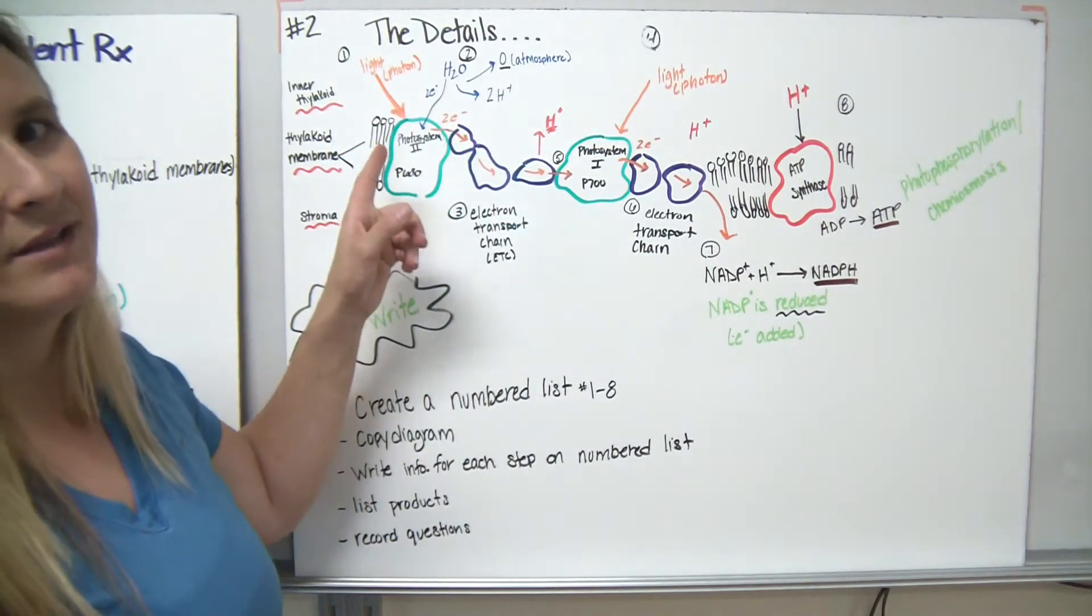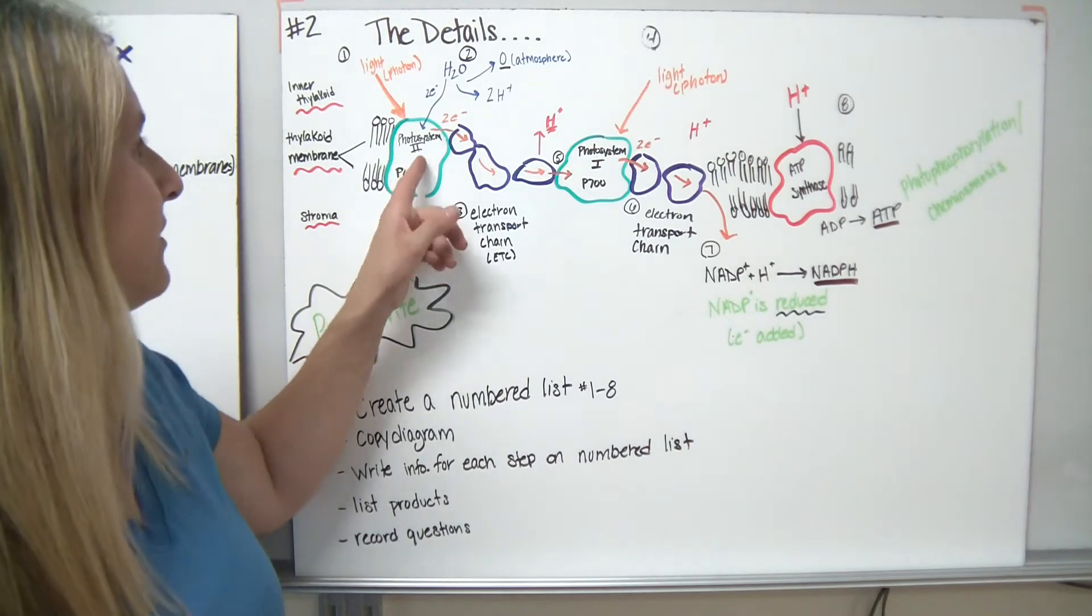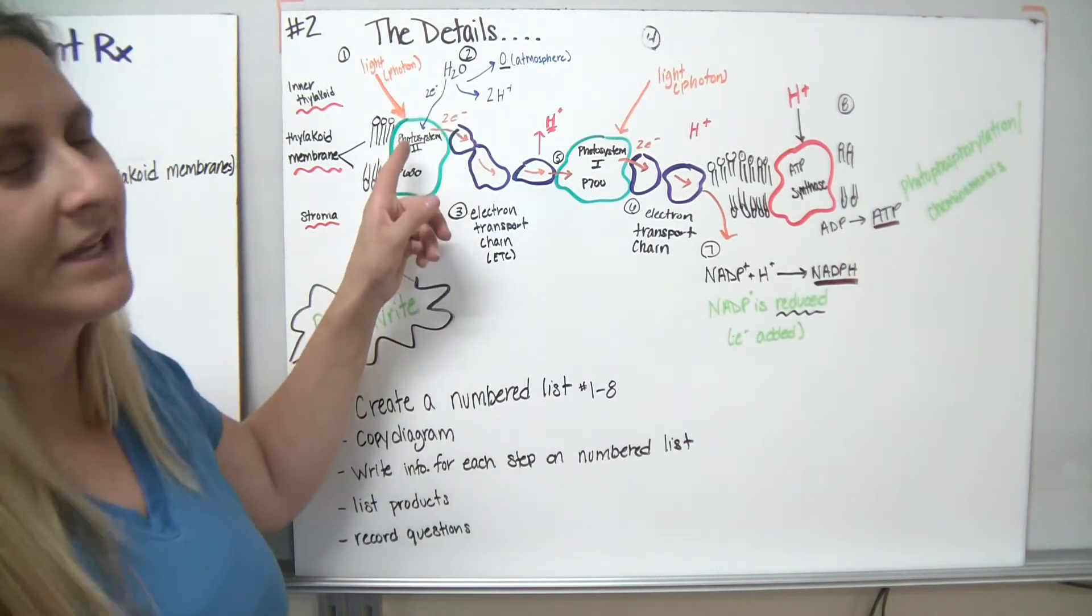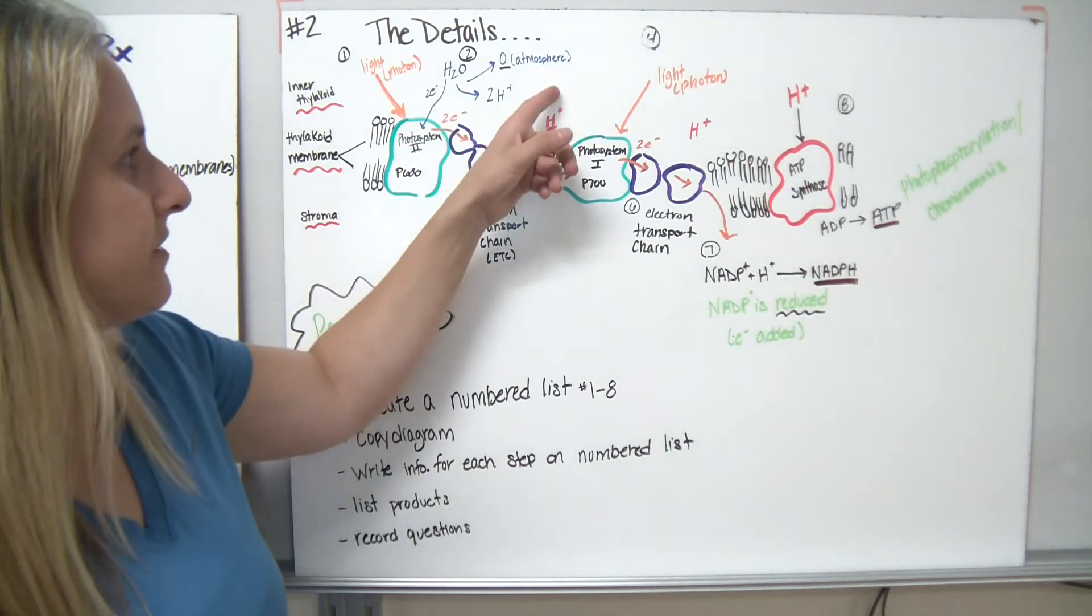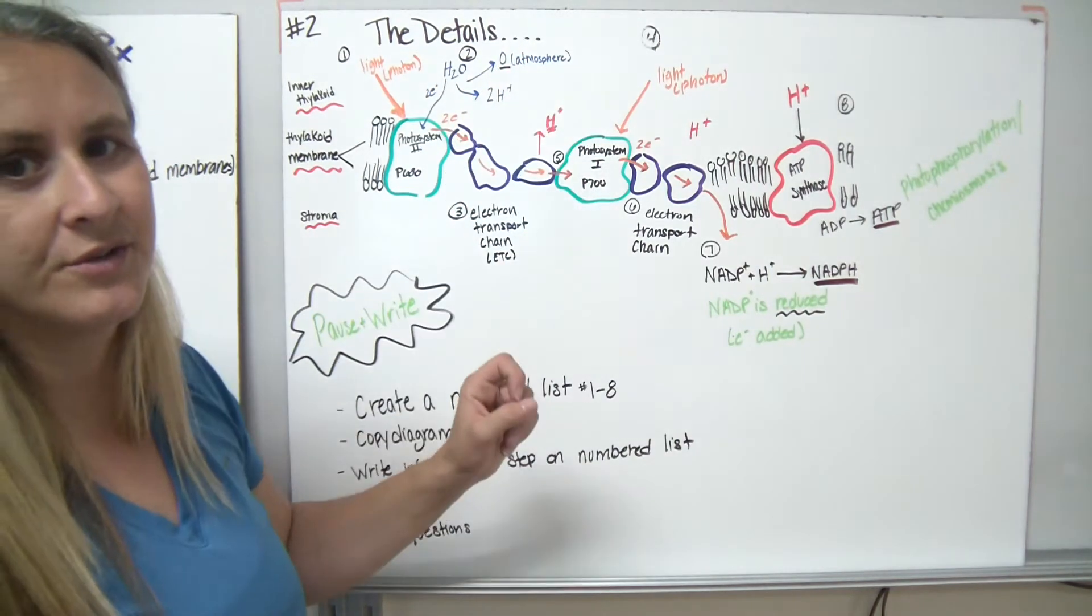So the first thing, we had the light photons coming in and exciting the electrons here in our photosystem two. The second thing, we had water coming in and getting split. The hydrogens create the gradient. Oxygen goes to the atmosphere.